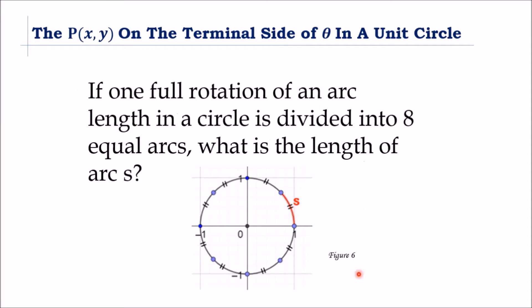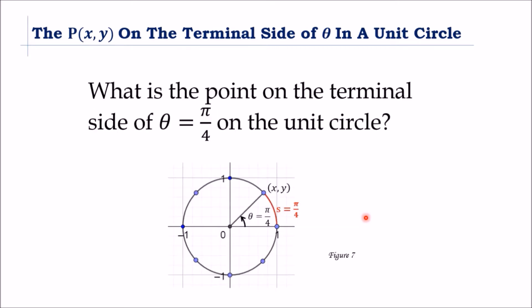Figure 6 shows an arc length that is 1/8 of a one full rotation. Its length will be 2π over 8, which is π/4 in reduced form. What is the point on the terminal side of π/4 on the unit circle? When its arc length is π/4, then the central angle theta is π/4. We need to know the coordinates x and y.